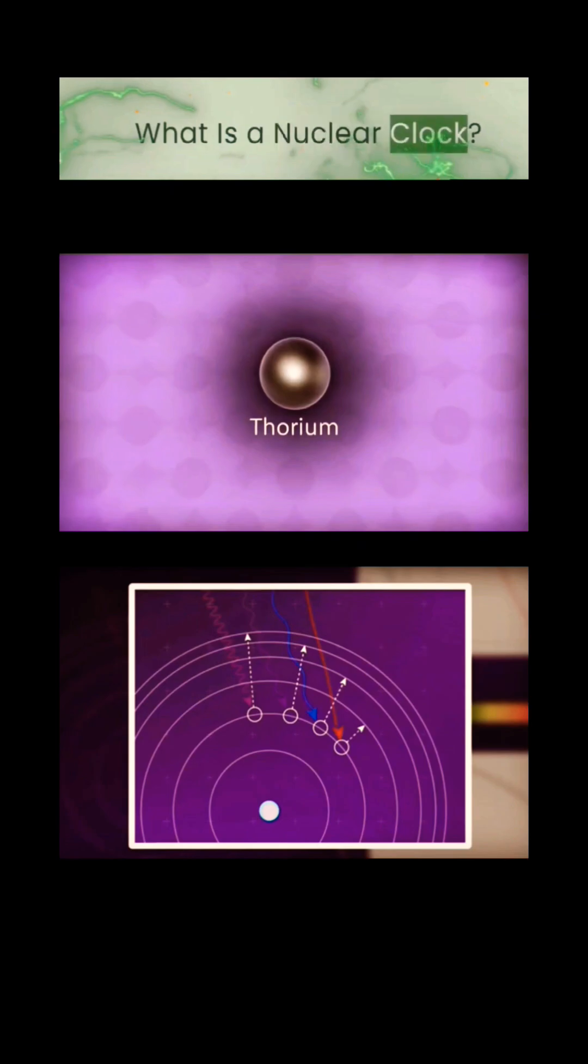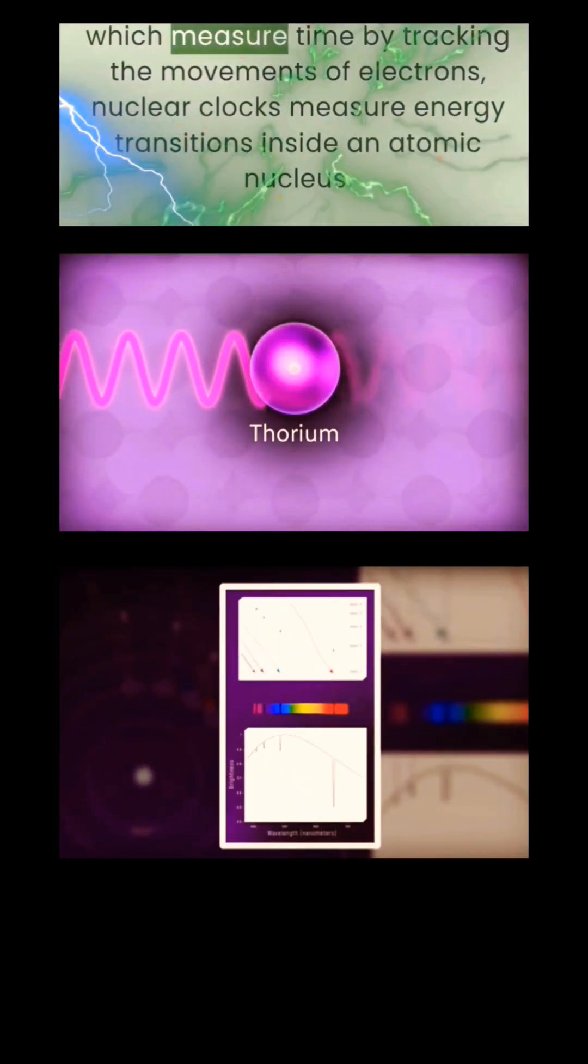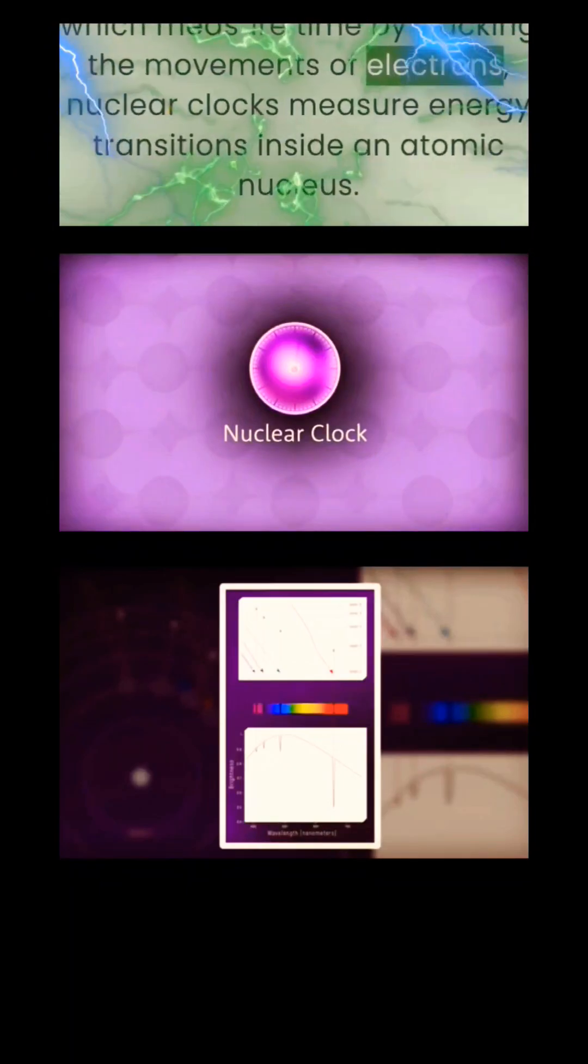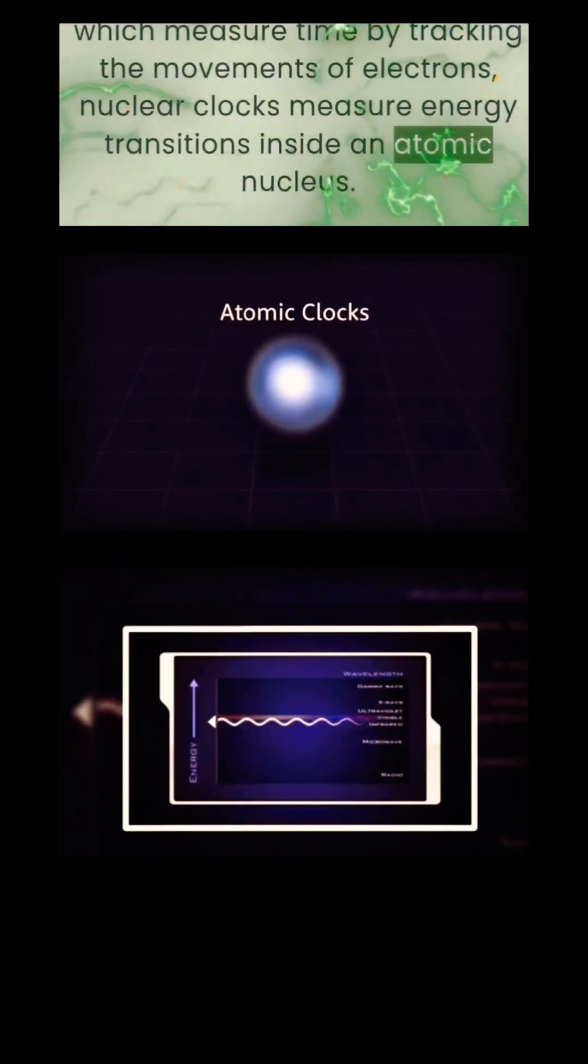What is a nuclear clock? Unlike today's atomic clocks, which measure time by tracking the movements of electrons, nuclear clocks measure energy transitions inside an atomic nucleus.